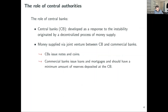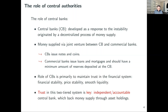When it comes to trusting financial authorities, central banks are the key element of fiat currencies. Central banks were originally developed as a response to instability in the money supply process. Before the Federal Reserve, any commercial bank could supply money. After the Federal Reserve Act in the early 1900s, money supply was concentrated at the Fed. Nowadays you have a joint venture between central banks — which issue notes and coins — and commercial banks, which issue loans and mortgages backed by reserves deposited at central banks. We call this system fractional reserve currency.